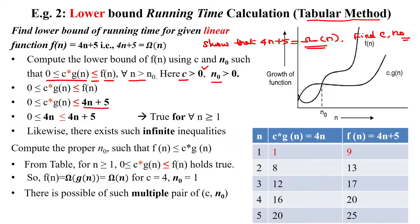The given linear function is 4n plus 5. We have substituted here for f(n), then we are having c times g(n).